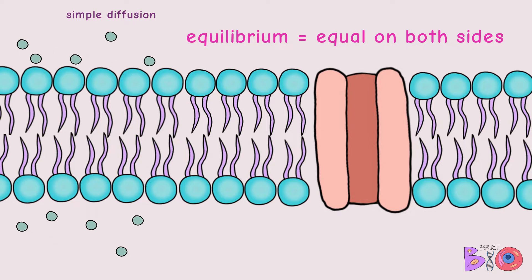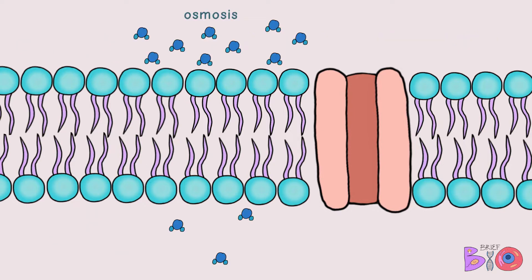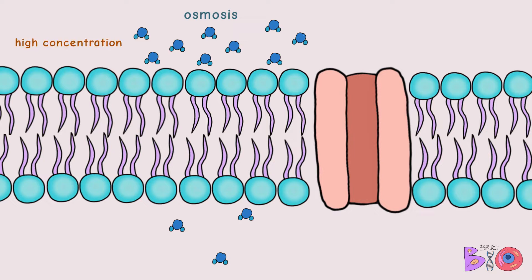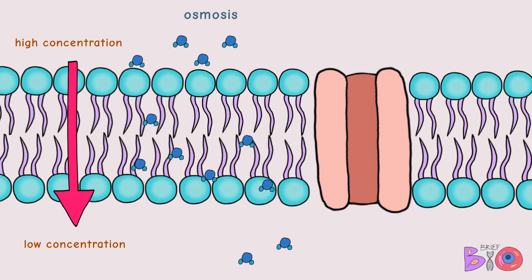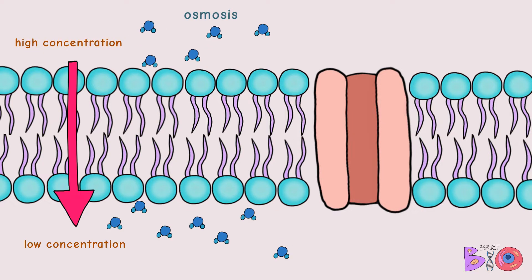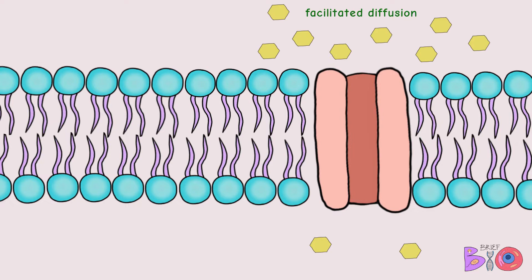The second type of passive transport is osmosis. Osmosis is the movement of water directly through the cell membrane. Again, it will move from a higher concentration at the top to a lower concentration at the bottom, until they reach equilibrium.